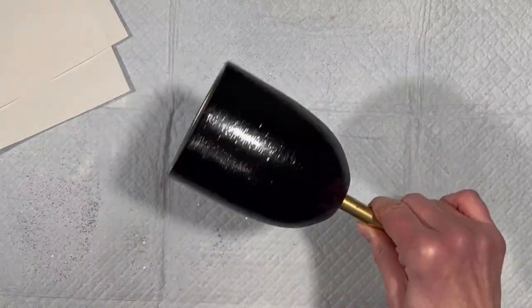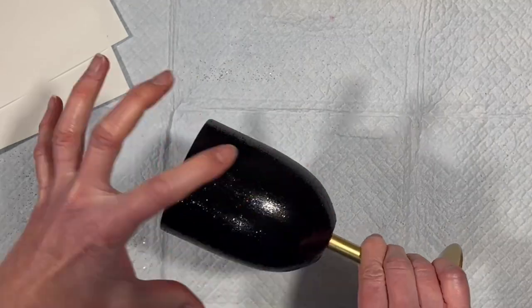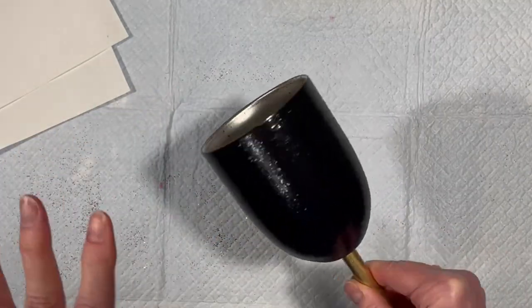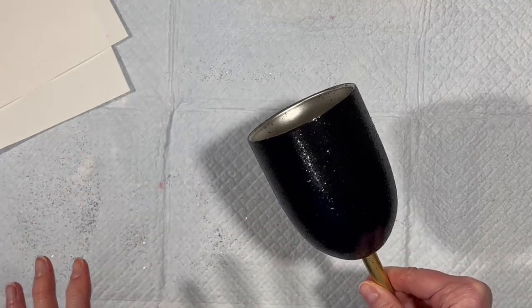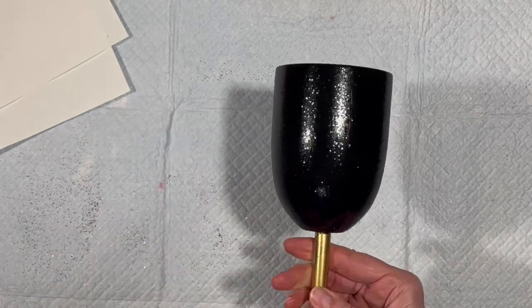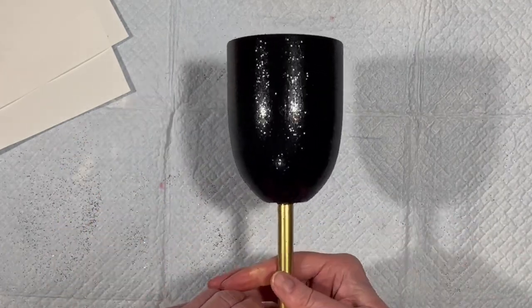All right, so we have a beautiful black sparkly wine glass top, or globe, and now I'm going to take this outside, spray it with a layer or two of Rust-Oleum Matte Clear, just to seal this glitter on before we start working on the gold part.